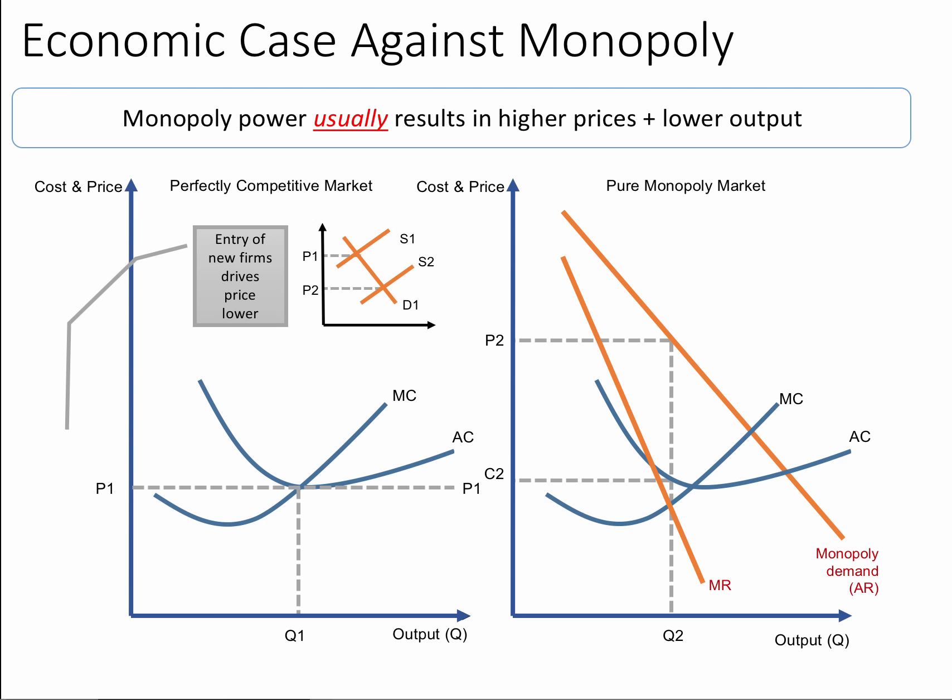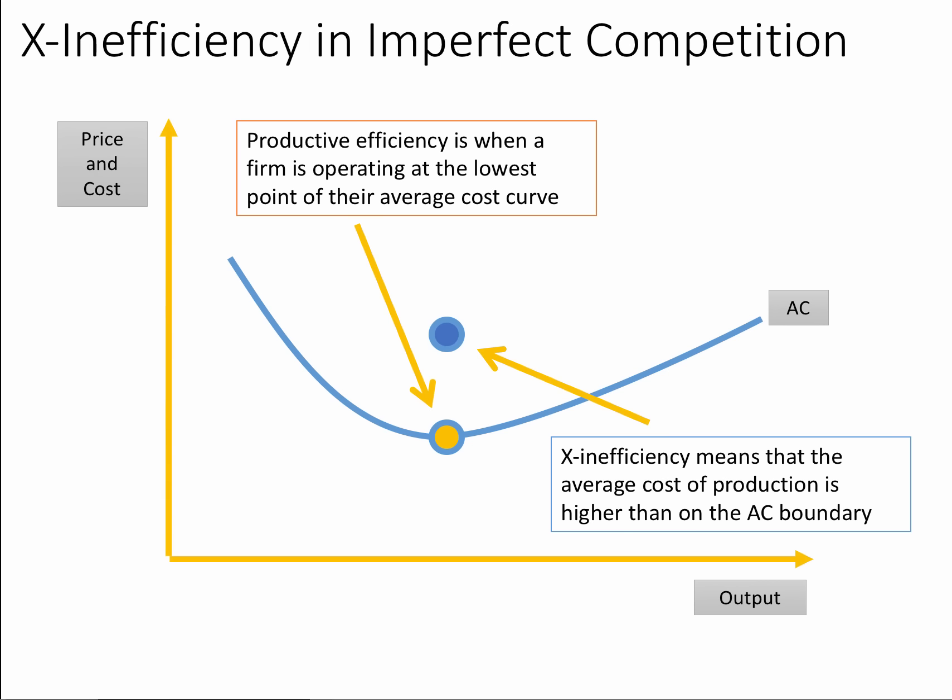This results in a loss of efficiency — supernormal profit from monopoly, but price well above marginal cost. There is also an additional potential efficiency loss from X inefficiency. If there is an absence of effective competition day-to-day, firms often allow their costs to drift higher because they don't face the stringent discipline of intense competition. There can be managerial slack — expense accounts going out of control or labour productivity suffering. X inefficiency means the actual average cost of production for a monopolist is higher than on their average cost boundary, representing a loss of productive efficiency.